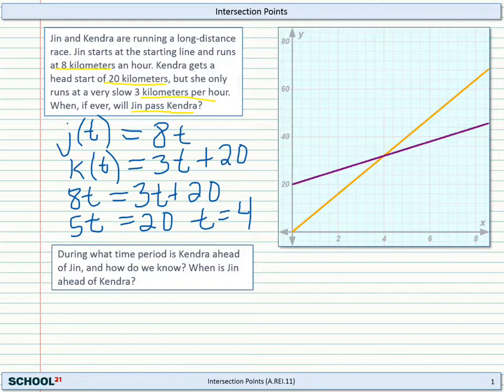Which function is which? Well, you can see that one of them has a starting value of 20 and has a slower rate of change, so that must be Kendra. And the other one has a starting value of 0, no head start for Jin, but she has a faster rate of change. And right here on the graph, you can see that there's an intersection point.